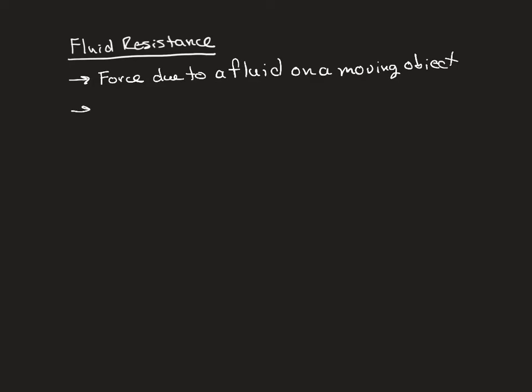And just like friction, it tends to be in the opposite direction of the movement of the object. So it is a resisting force, resisting the motion of the object. So if your object is falling, you're going to have a force due to gravity acting downward, and the fluid resistance is going to act upward, which is going to affect the force, the acceleration, and the change in speed of that particular object.